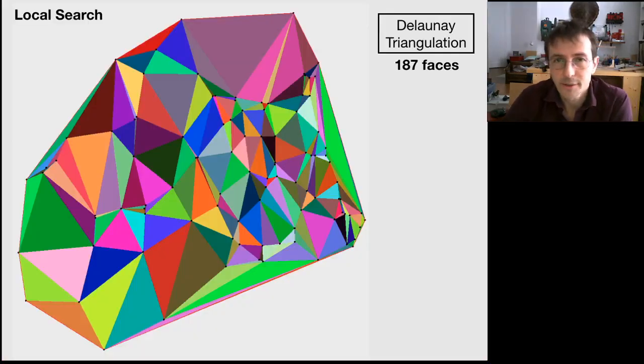So let's have an example to clarify. And you can see a larger dataset here and an initial triangulation of 187 faces.